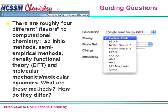Ab initio methods, semi-empirical methods, density functional theory, and molecular mechanics and molecular dynamics, otherwise known as MM and MD. What are these methods and how do they differ? This beginning conversation on methods in computational chemistry will introduce you to these four different methods, including a beginning introduction to some of the mathematics involved.